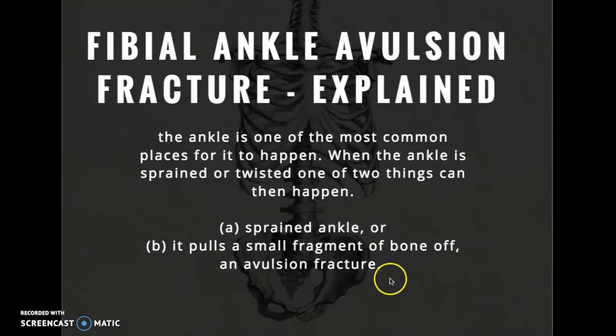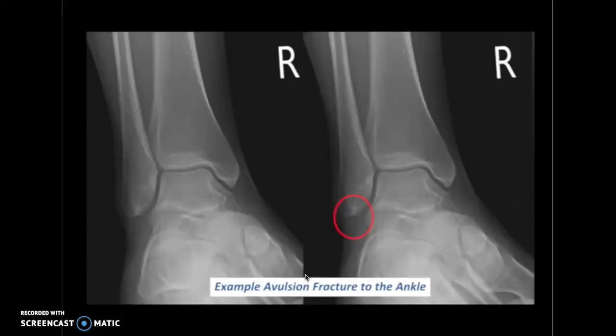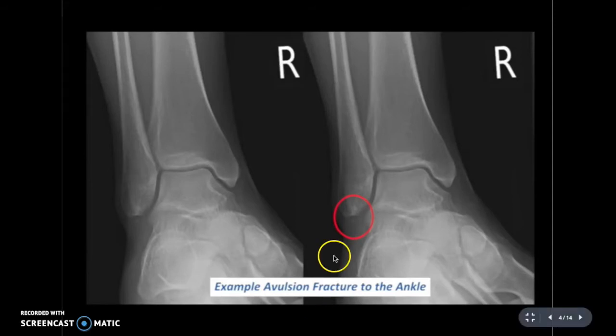This is what is called an avulsion fracture. It is impossible for you to know the difference between a sprained ankle and an avulsion fracture, which is why you should always do an X-ray following a moderate to severe ankle injury.